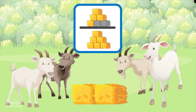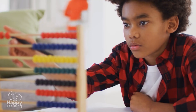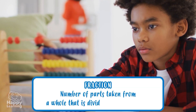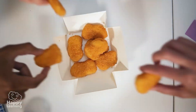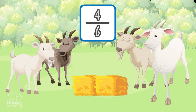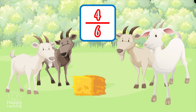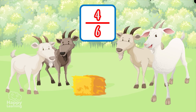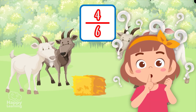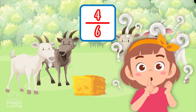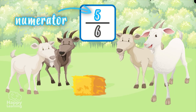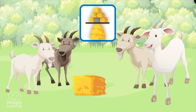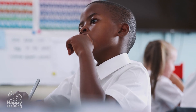Easy, isn't it? Now we know that a fraction represents the number of parts we take from a whole number that is divided into equal parts. Hey — he ate another piece! He's changed the fraction. Which part of the fraction has changed? The numerator — very good! Because we've now taken five parts of the whole number that was divided into six parts.